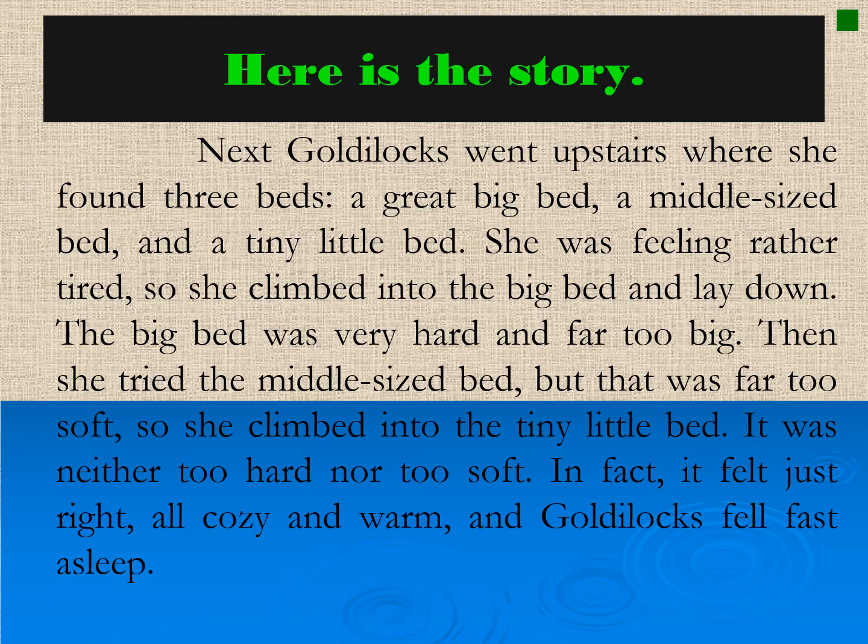Next, Goldilocks went upstairs, where she found three beds — a great big bed, a middle-sized bed, and a tiny little bed. She was feeling rather tired, so she climbed into the big bed and lay down. The big bed was very hard and far too big. Then she tried the middle-sized bed, but that was far too soft. So she climbed into the tiny little bed — it was neither too hard nor too soft. In fact, it felt just right, all cozy and warm, and Goldilocks fell fast asleep.